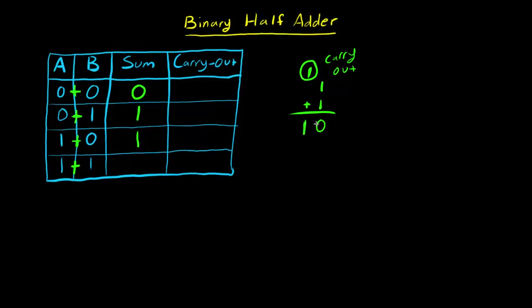So one plus one is two, or one zero. So we are going to call this zero the sum of one plus one, but we know that we had to carry over an extra one to the next column over.